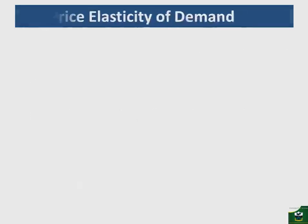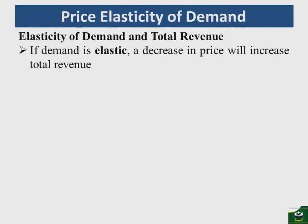If demand is elastic — whether perfectly or imperfectly elastic — a decrease in price will increase total revenue. This is because the firm is able to sell more units. Conversely, an increase in price will reduce total revenue when demand is elastic.